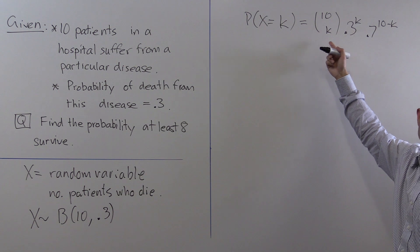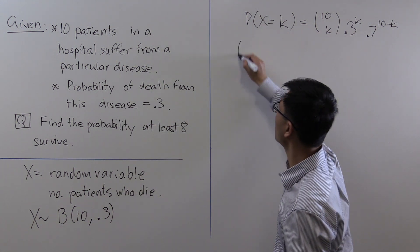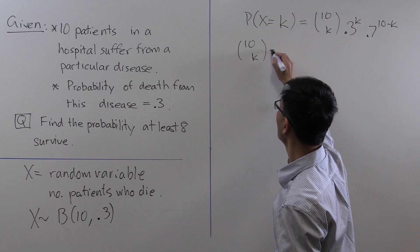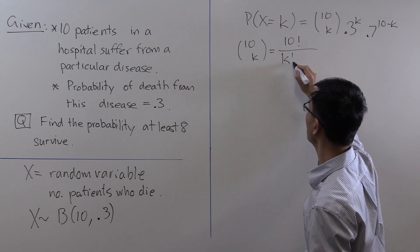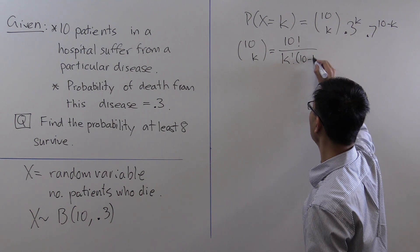If you haven't used the binomial coefficient for a while, let's remind ourselves what that is. 10 choose k is given by definition as 10 factorial divided by k factorial times 10 minus k factorial.